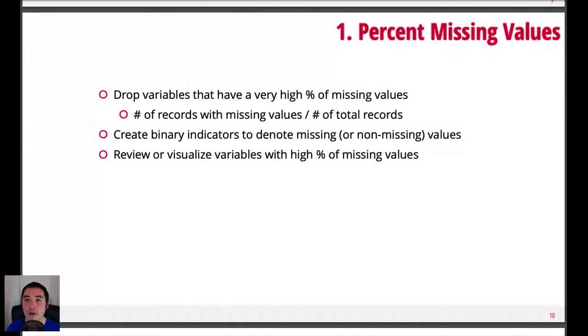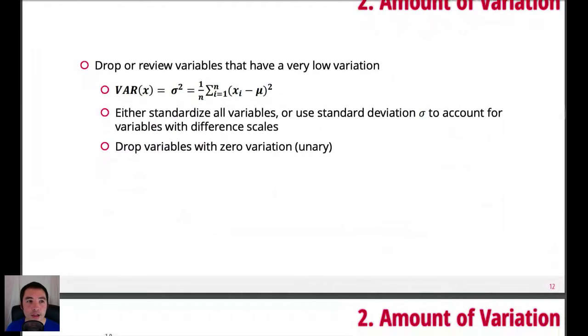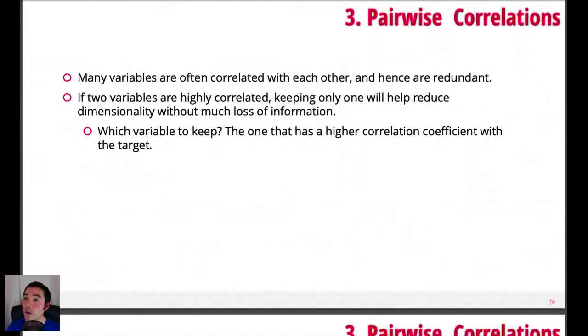Next idea, amount of variation. So the basic idea is if a feature is mostly all the same value, then the model's not going to learn anything from it. So you should drop it. Okay. So that's the next one. Next idea is pairwise correlation. So if two of your features are highly correlated, you can drop one because they're redundant. So if you drop one, you won't actually be losing that much information in terms of what your model can learn from. Okay. So that's another idea.